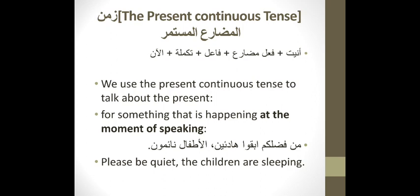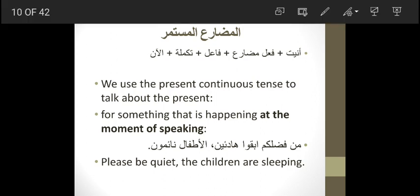Today we are going to discuss the present continuous tense — Zaman al-Mudari' al-Mustamirr. We will have a quick review of the uses of this tense. In Arabic, if you see حروف المضارع — alif, nun, ya, or ta — attached to a verb, with the word الآن (now) at the end of the sentence, then the tense is the present continuous. Understanding its uses in English is necessary so we can match the Arabic meaning and choose the appropriate tense when translating.